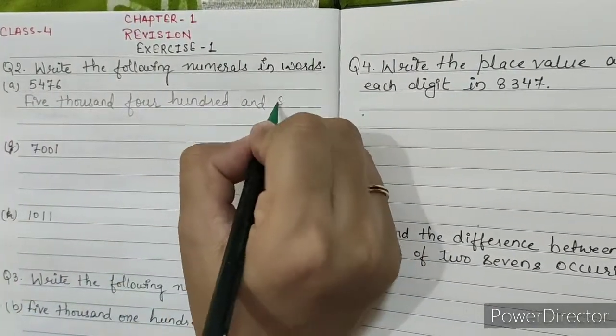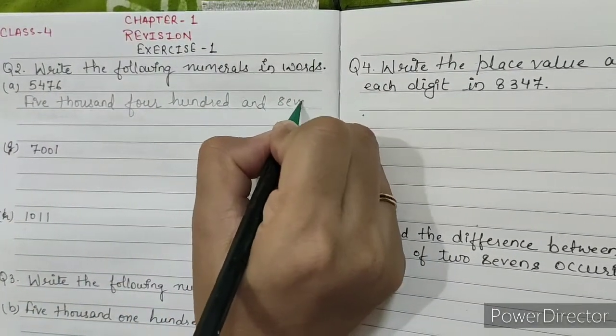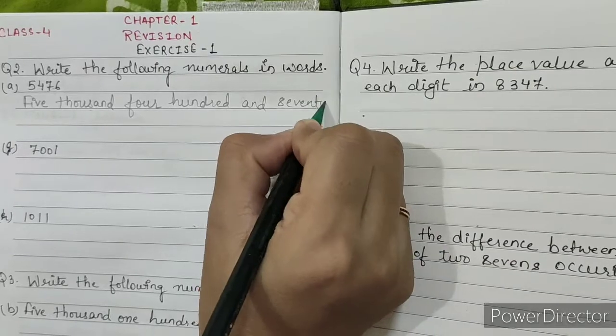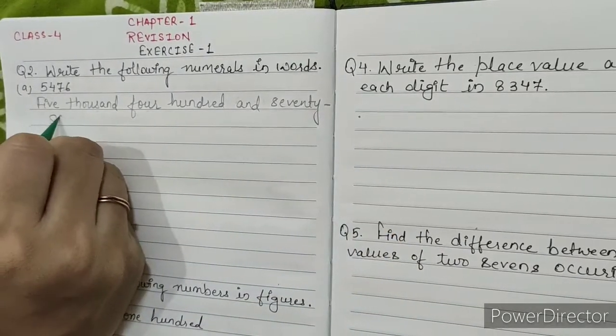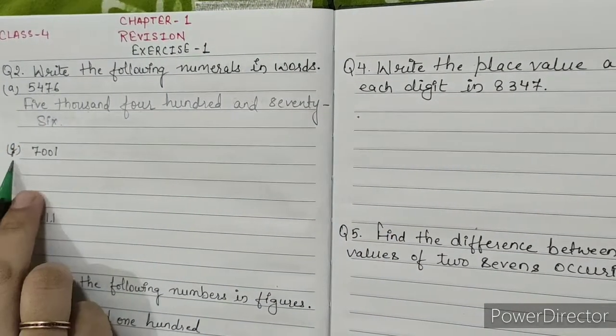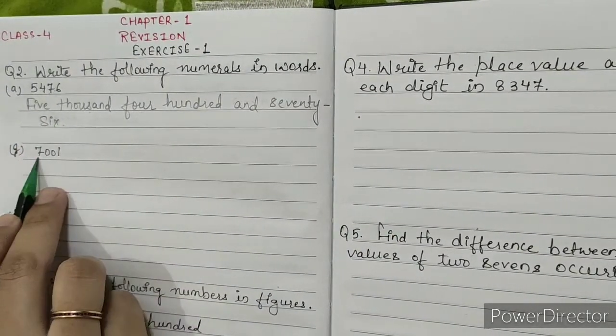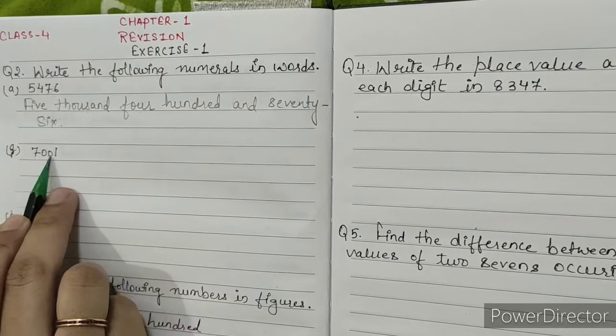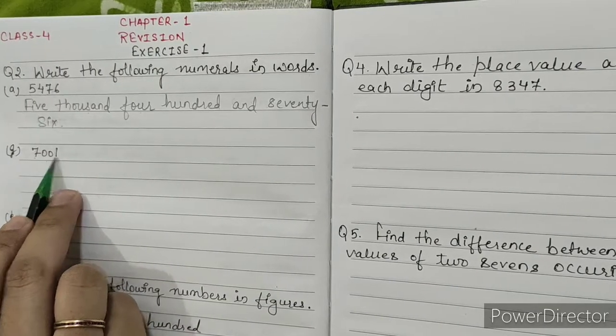5,476. We write SEVENTY — 70 — and SIX — 6. So the full number 5,476 is written as Five Thousand Four Hundred Seventy Six.